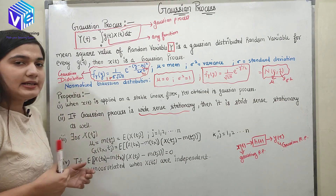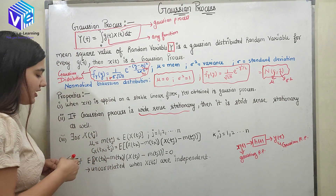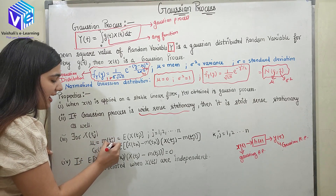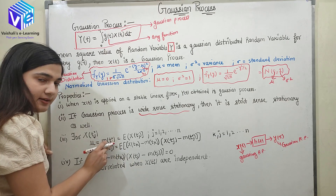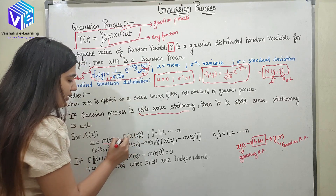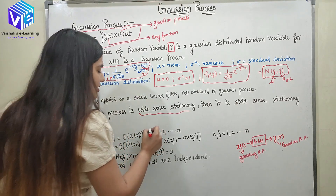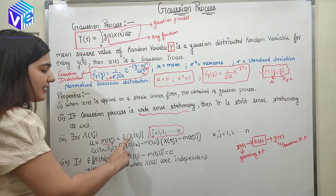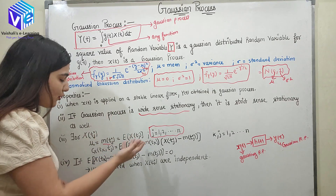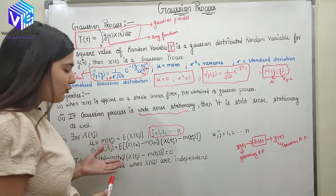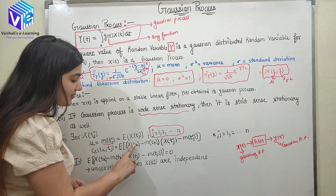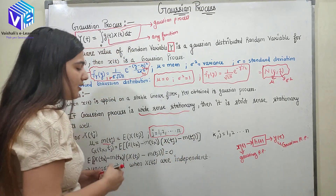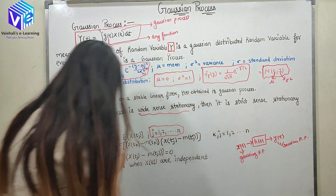Now the next property gives the mean and the autocorrelation function of the Gaussian process. The mean m(t_j) is given by E[x(t_j)], where j is changing from 1 to n, representing different instants of time — so I am taking the mean of x over different instants of time. The autocorrelation function c_x is given by: c = E[(x(t_k) − m(t_k)) · (x(t_j) − m(t_j))]. So c_x is my autocorrelation function.